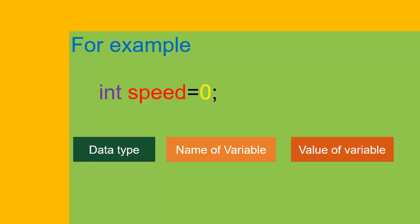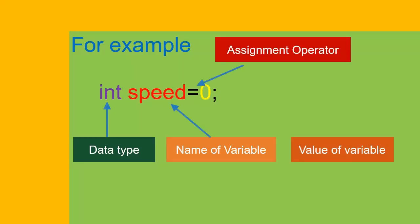In this example, we can see that int is the data type of the variable, which is identified by name 'speed', which is assigned a value of zero by using the assignment operator. The value of speed can be changed or modified in future according to the requirement of the program. That's why we know speed as a variable.